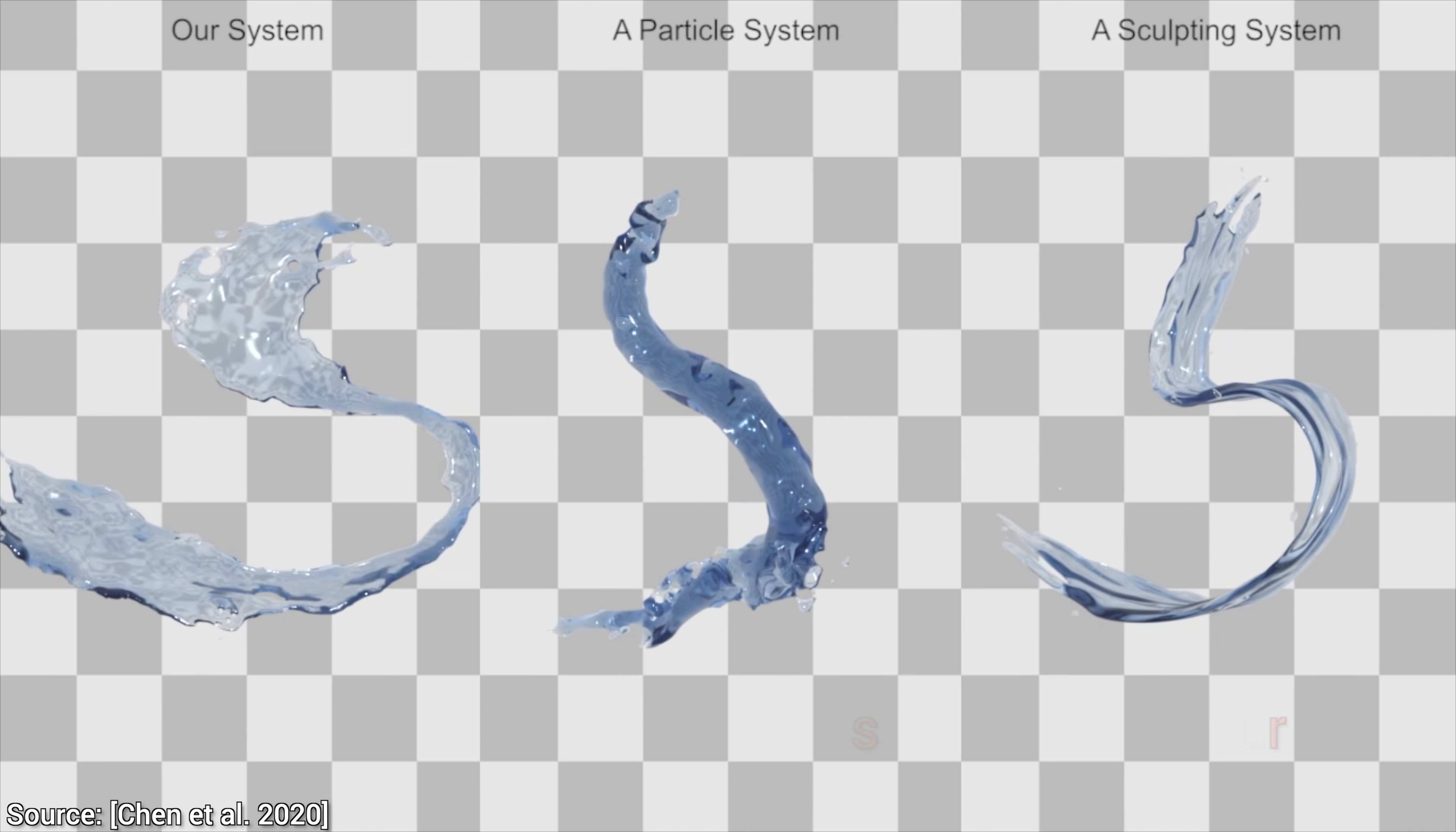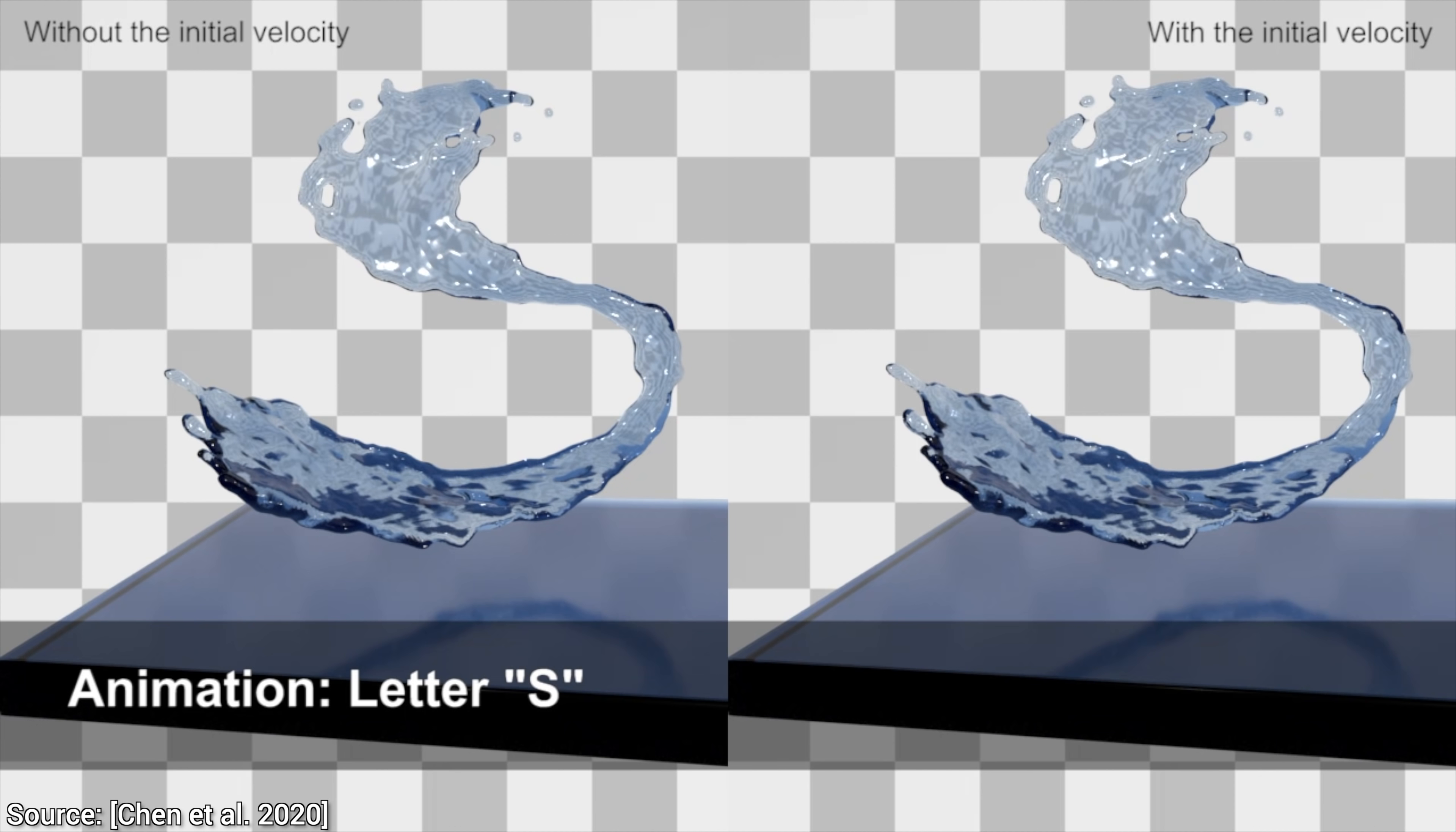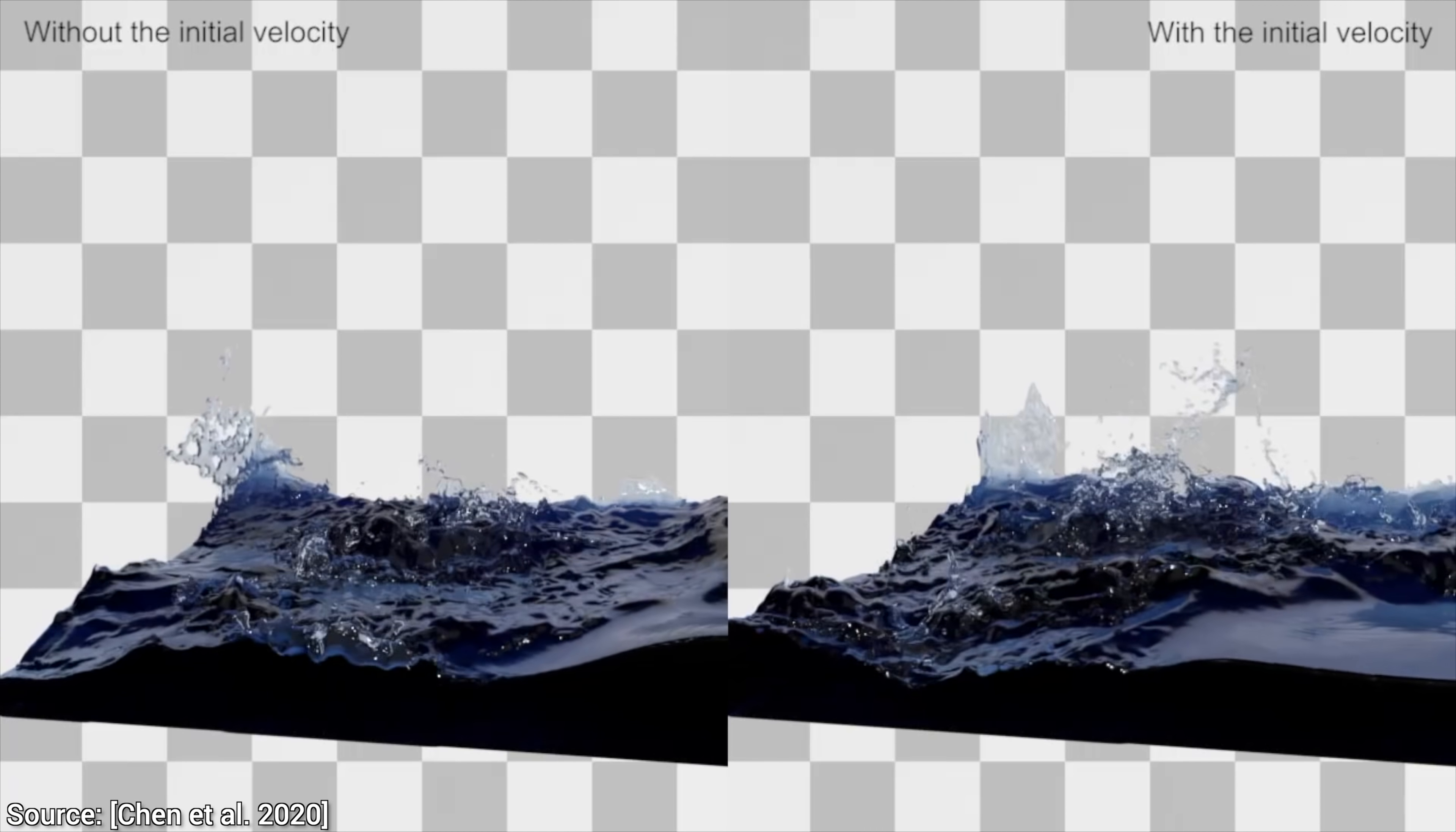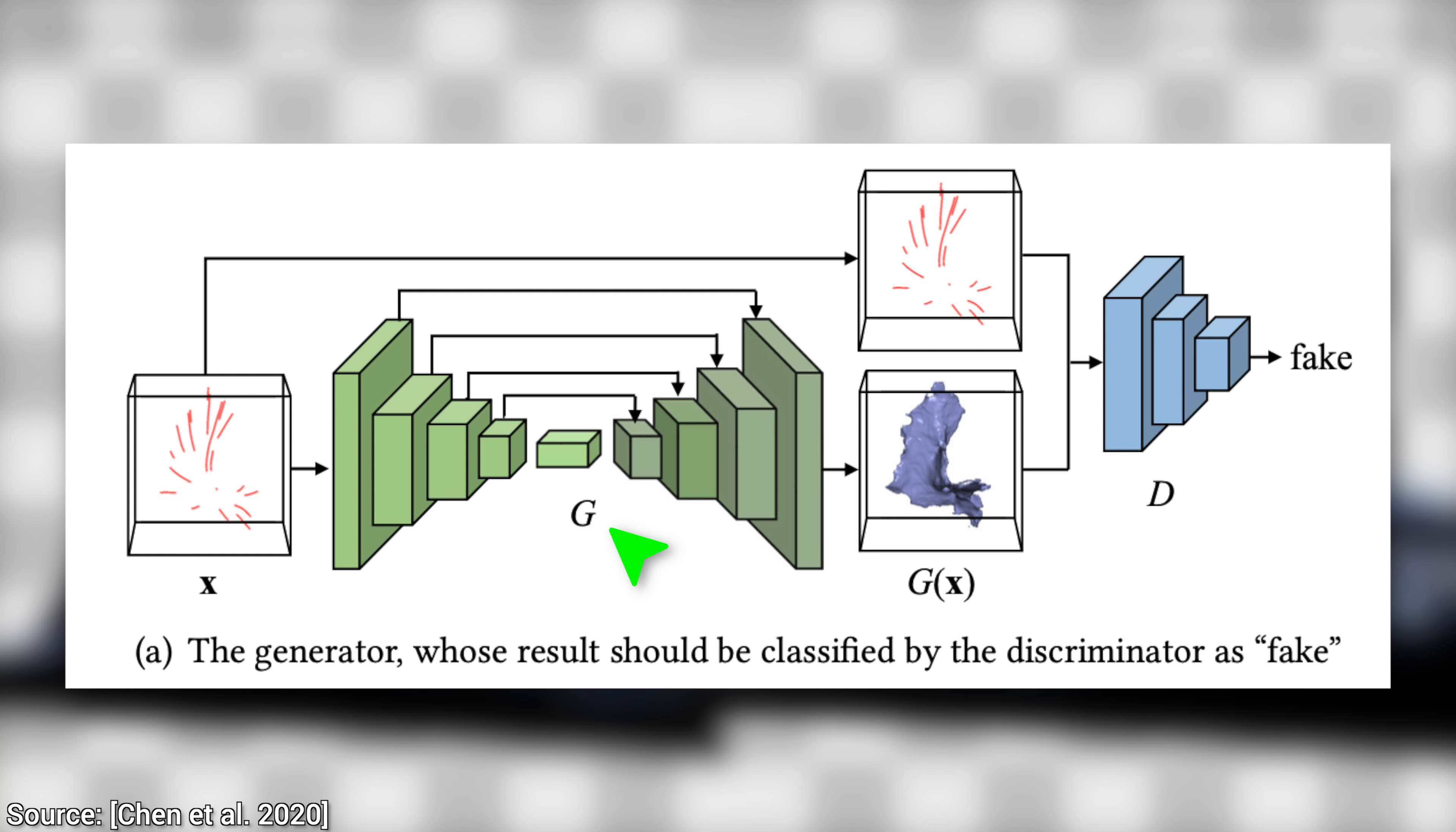So how does all this magic happen? What is the architecture of this neural network? Well, this behavior emerges not from one but from the battle of two neural networks. The generator neural network creates new splashes, and the discriminator finds out whether these splashes are real or fake. Over time, they challenge each other and they teach each other to do better.